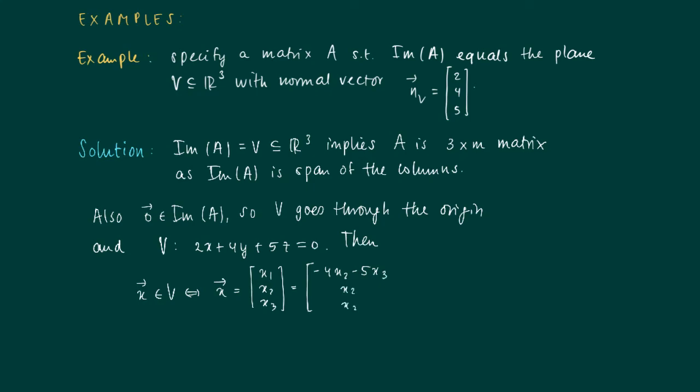x2 and x3 can be chosen. So these are the degrees of freedom. So we get x2 times the vector minus 4, 1, 0 plus x3 times the vector minus 5, 0, 1.